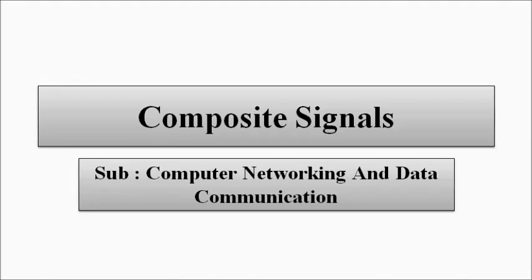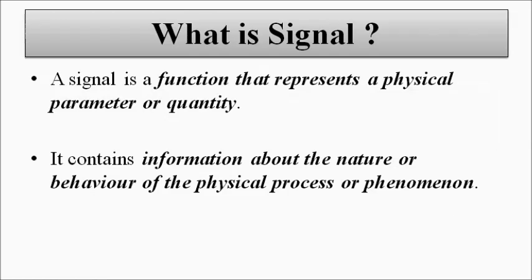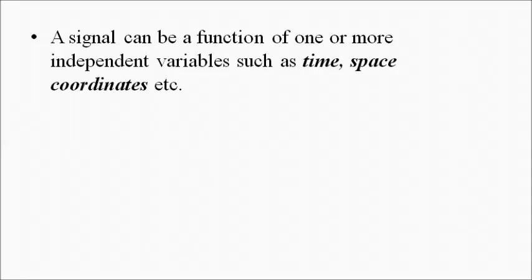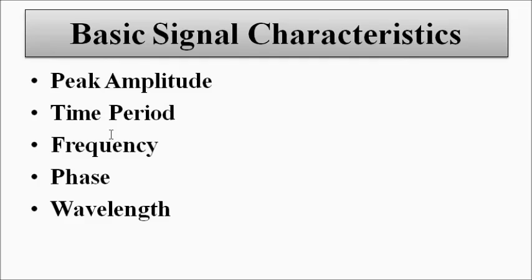Before discussing composite signals, first we have to have a quick refresh on the basic simple signal. Essentially, a signal is a function which represents any physical parameter or quantity. It can be a function of many variables or just one variable. In discussions related to electrical, electronics, and telecommunication, we talk mostly about time domain signals — a function of time. The basic signal characteristics used to describe a signal are amplitude, time period, frequency, phase, and wavelength.